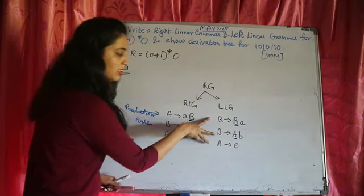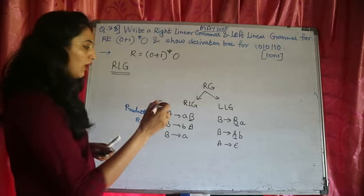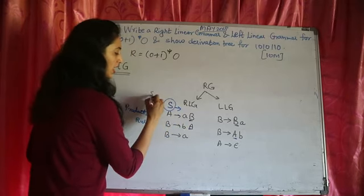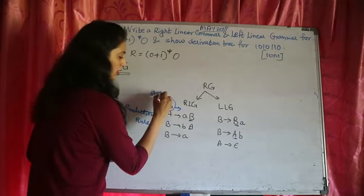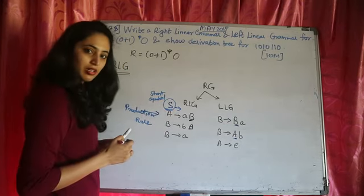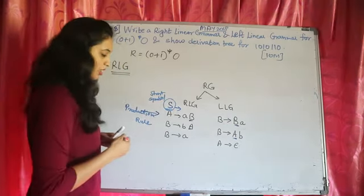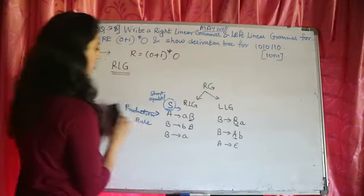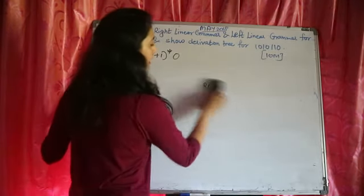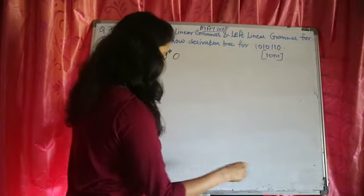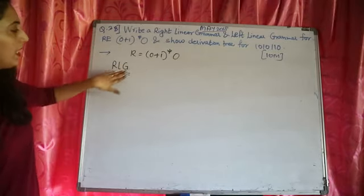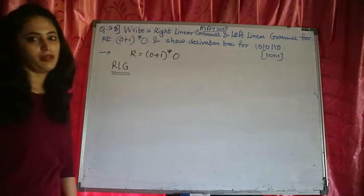There are three production rules here. Every grammar should have an S indicating the start symbol. We will always start with the S rule. This is the basic introduction to right linear and left linear grammar. Now let us start with the explanation of this answer.